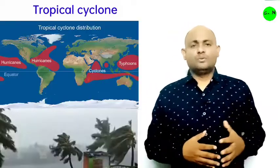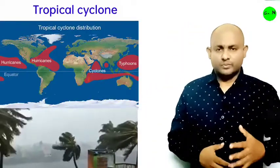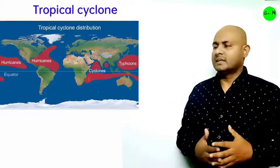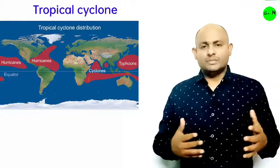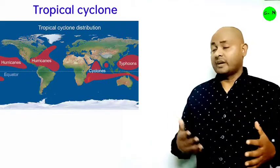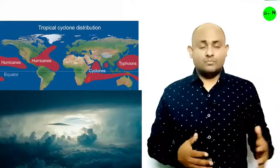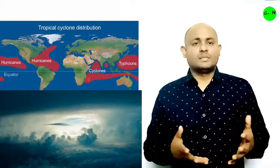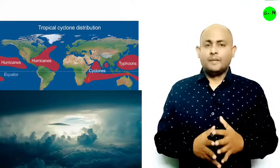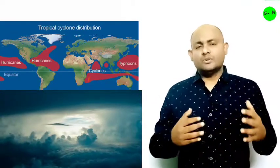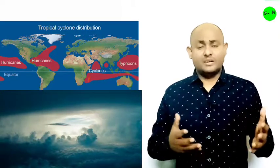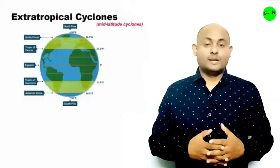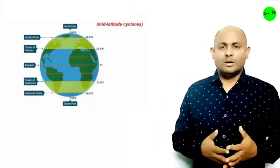Tropical cyclones develop in the region between the Tropic of Cancer and the Tropic of Capricorn. They are large-scale weather systems developing over tropical or subtropical waters, where they get organized into a surface wind circulation. Extra-tropical cyclones occur in temperate zones and high latitude regions and are known to originate in the polar region.